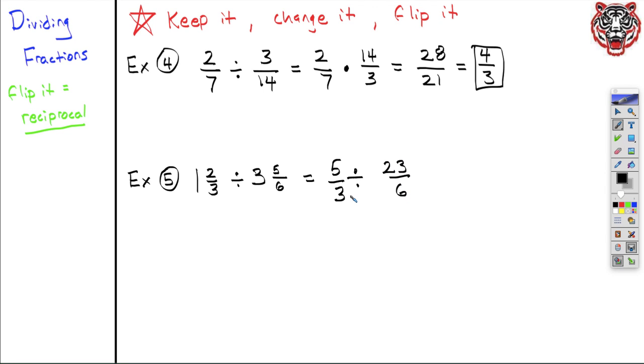All right, so now I've turned this Example 5 into a type of problem like Example 4, where I just have fractions, not mixed numbers, and I'm dividing. So keep it, change it, flip it. Keep it. Applies to the 5 thirds. Don't change that one. Change it. And take the reciprocal, 6 over 23.